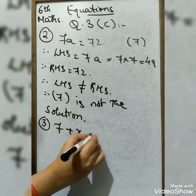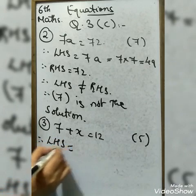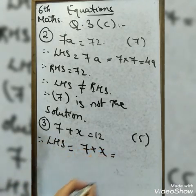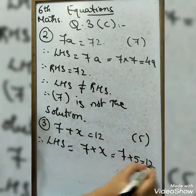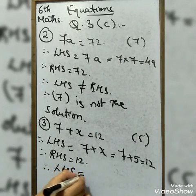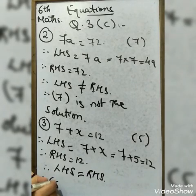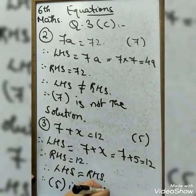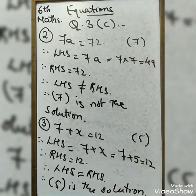Third question: 7 + X = 12, with X = 5. LHS = 7 + 5 = 12. RHS = 12. LHS = RHS, therefore 5 is the solution. The 4th and 5th sums you will do on your own.